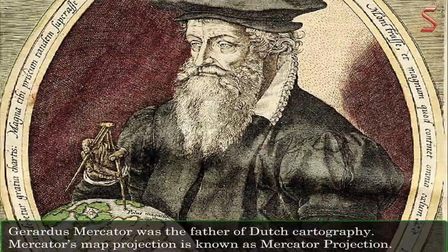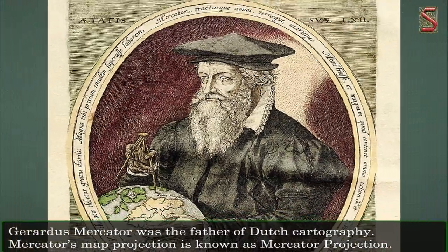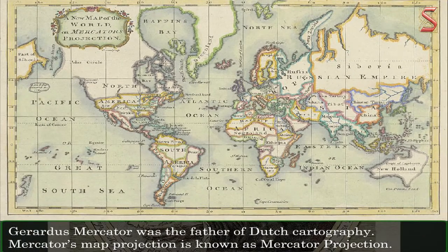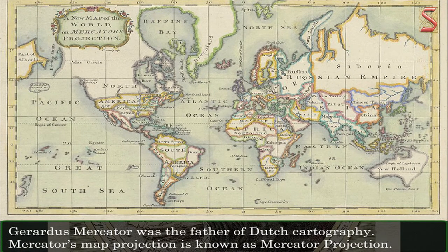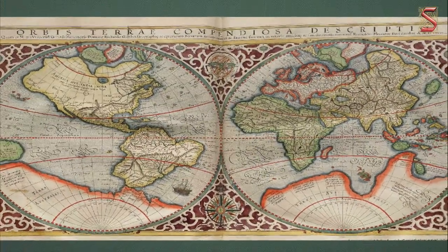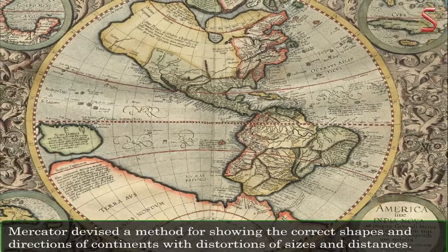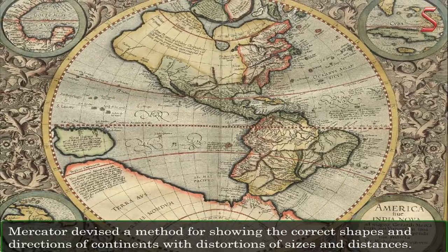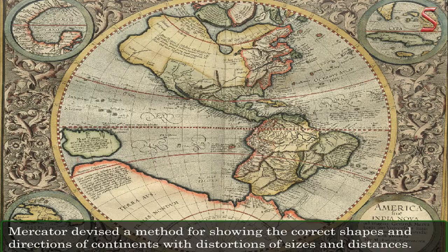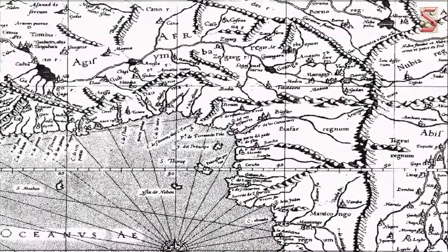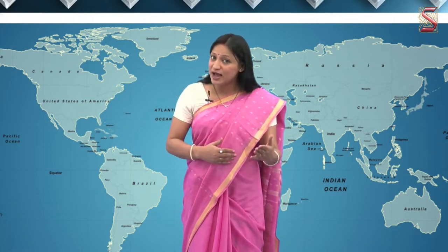Do you know Gerardus Mercator? Gerardus Mercator was the father of Dutch cartography. Mercator's map projection is known as the Mercator projection. Most of the world maps that we use today are based on his projection. Mercator devised a method for showing the correct shapes and directions of continents, with distortions of sizes and distances. We still use this method to show the world.